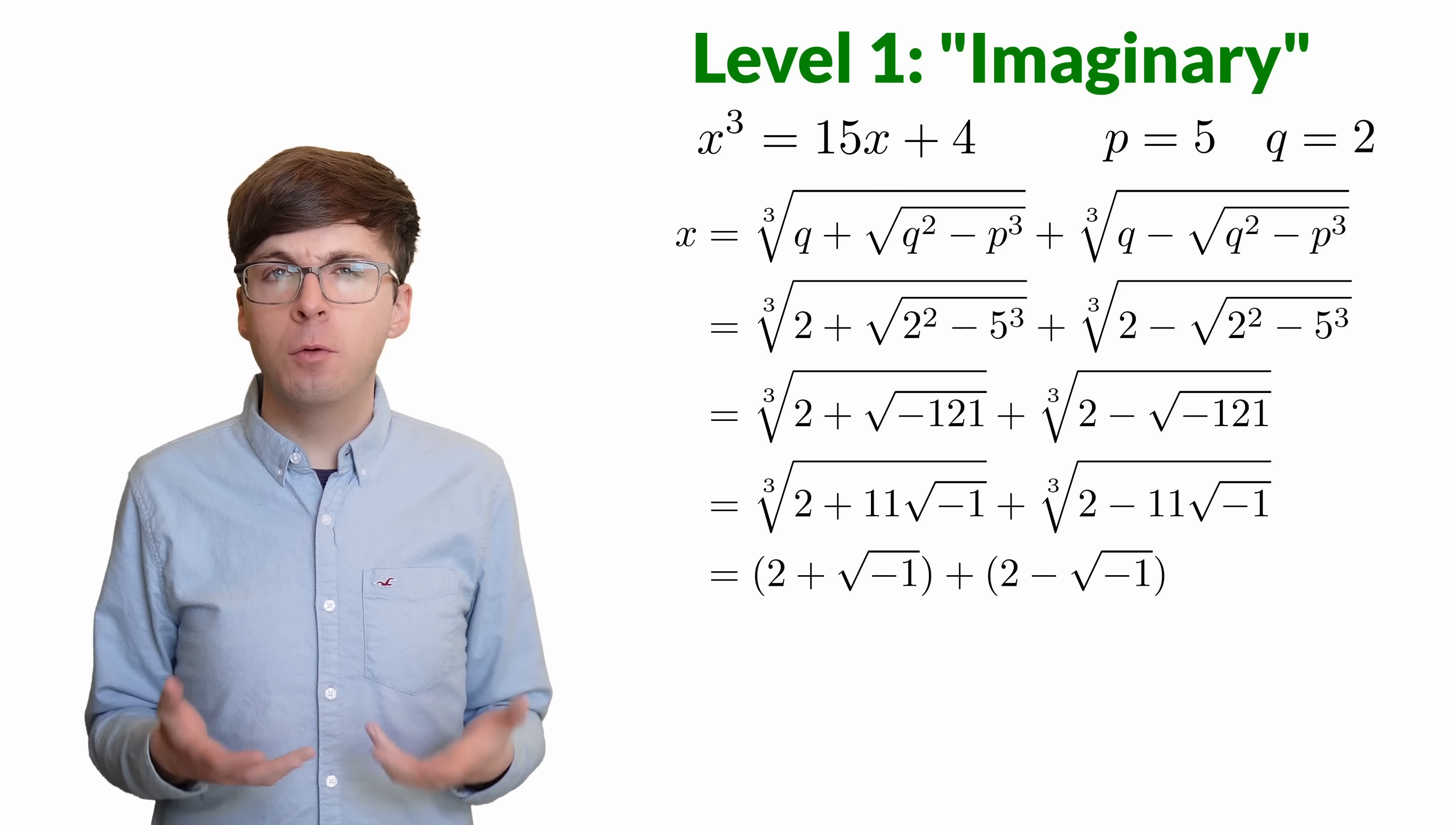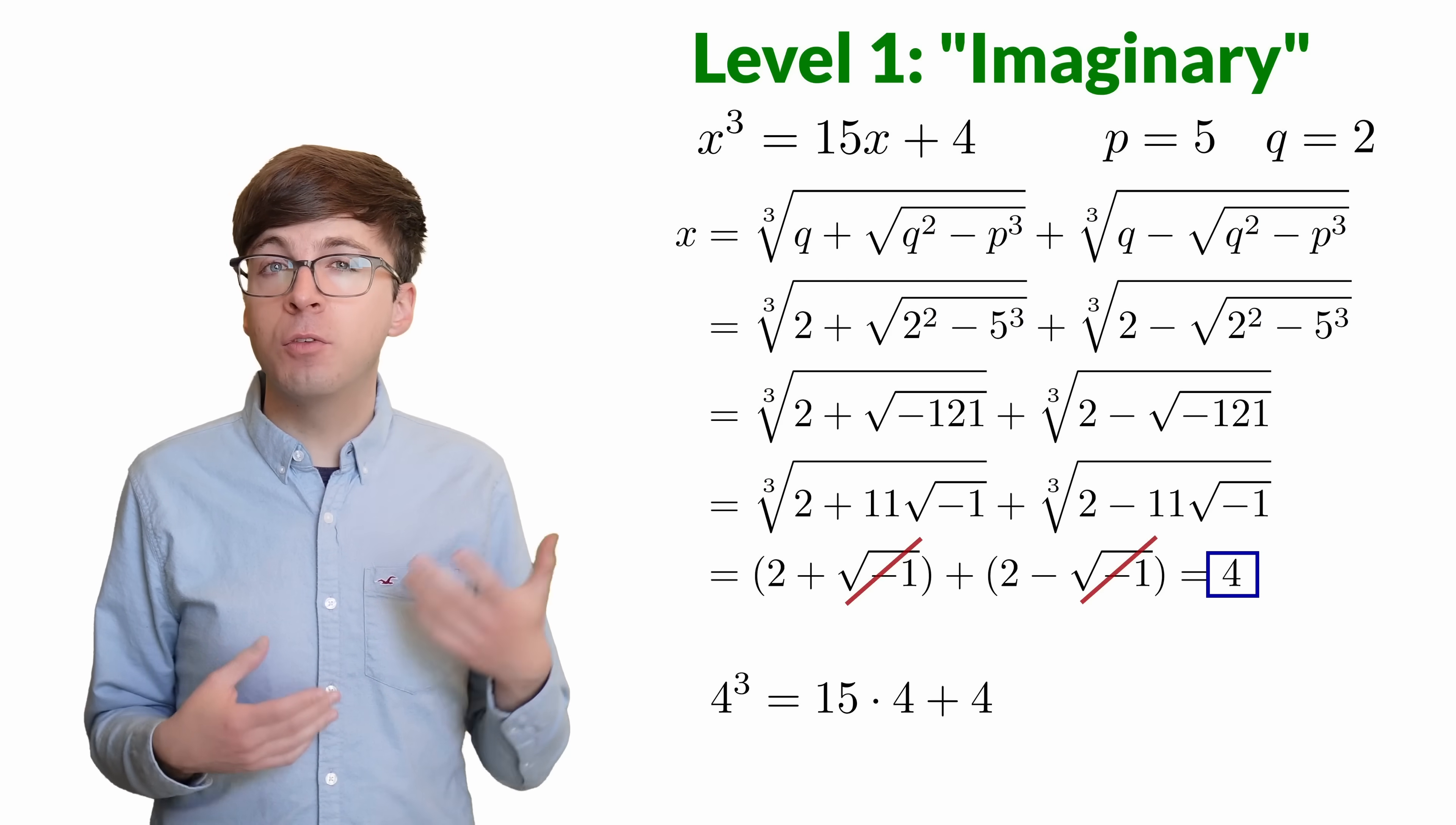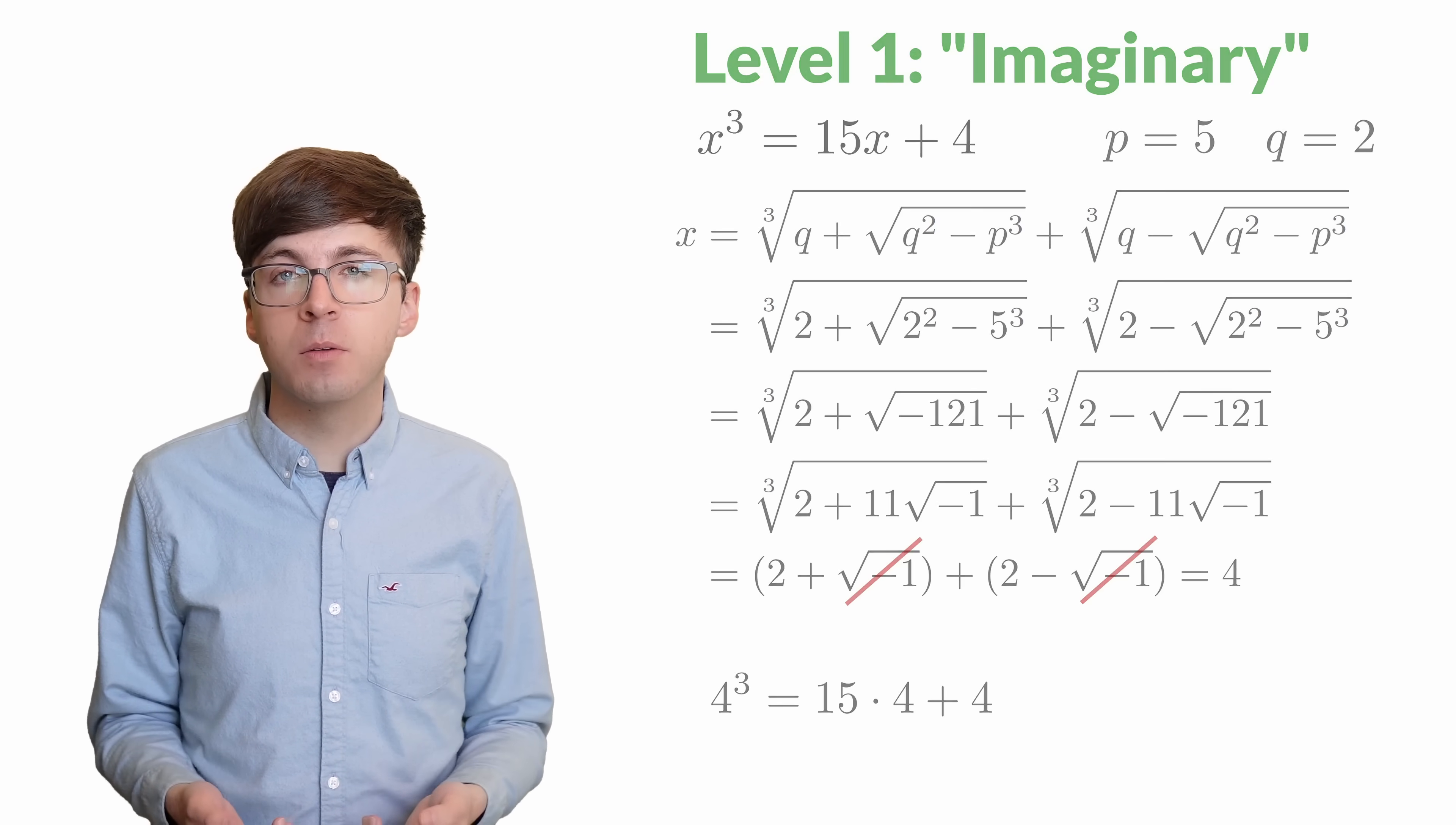So now what happens? Those square roots of negative 1 cancel out, and all we have left is 2 plus 2 is 4. And we can plug in 4 to check that it really is a solution to the cubic equation. We found a real solution to this real cubic equation by allowing ourselves to imagine that the square root of negative 1 could be a number. Even though we were completely focused on the real numbers, the imaginary numbers were necessary to solve this problem.